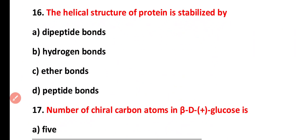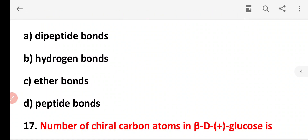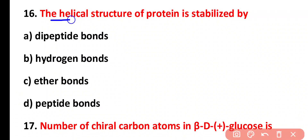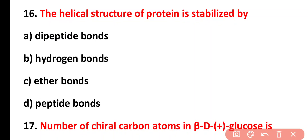Question sixteen: the helical structure of protein is stabilized by which bond? Options: pi-peptide bond, hydrogen bond, ether bond, peptide bond. The correct answer is option B. The secondary structure of a protein is maintained and stabilized by hydrogen bonds.